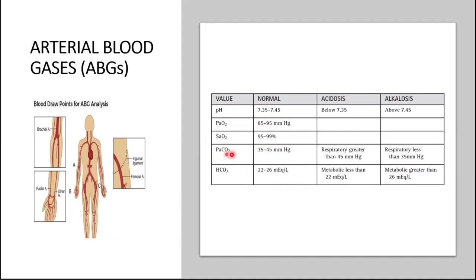Since PCO2 is a respiratory acid, if you keep accumulating more of it — going up from 45 to 50, 60 — you're going to get respiratory acidosis. Conversely, if your PCO2 levels drop and you keep losing respiratory acid, you are going to go into respiratory alkalosis.